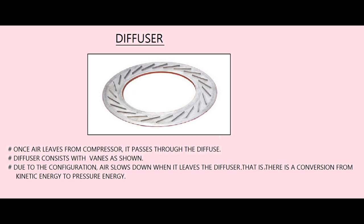Once air leaves the compressor, it passes through the diffuser. The diffuser consists of vanes. Due to the configuration, air slows down as it passes through the diffuser — that is, there is a conversion from kinetic energy to pressure energy.